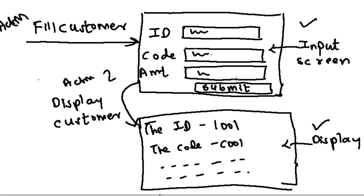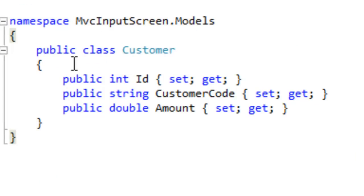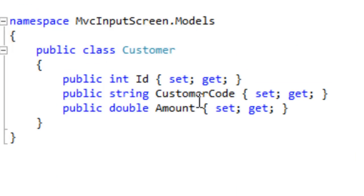Let's try to create these two input screens, define the actions, and see how this whole demo comes together. Here is our customer class with all the necessary properties: ID, customer code, and amount.